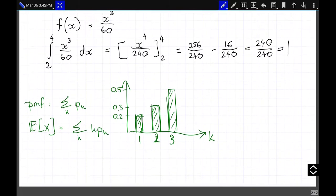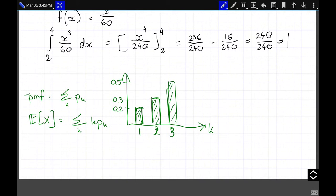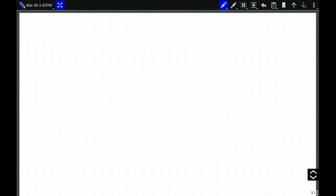And now in the continuous case, the expected value of our random variable x is equal to the integral again of f(x) dx times x.